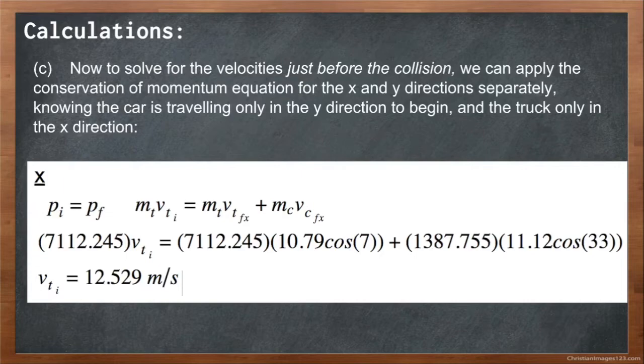Part C, now we have to solve for the velocity just before the collision. We can apply the conservation of momentum equation for the x and y directions separately, knowing that the car is traveling only in the y direction to begin and the truck is only traveling in the x direction. Starting with the x direction, using our momentum equations, we know the mass of the truck times the velocity of the truck initially equals the mass of the truck times its final velocity plus the mass of the car times its final velocity since it was a collision.